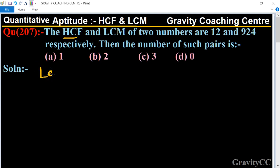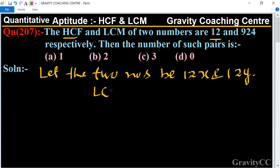Let the two numbers be 12x and 12y. So here 12 is the HCF of these numbers and x and y are co-primes. And according to the question, LCM equal to 924.